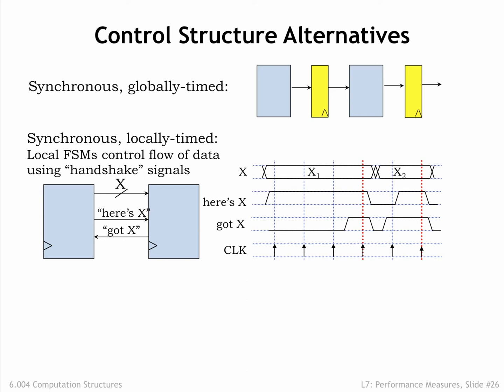If both stages see that here's X and got X are asserted at the same clock edge, the handshake is complete and the data transfer happens at that clock edge. Either stage can delay a transfer if they're still working on producing the next output or consuming the previous input.